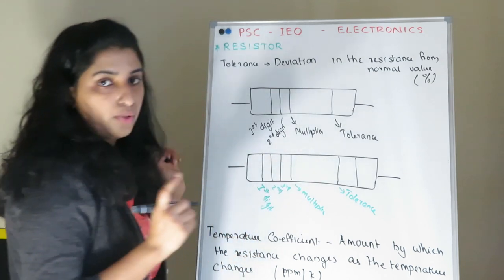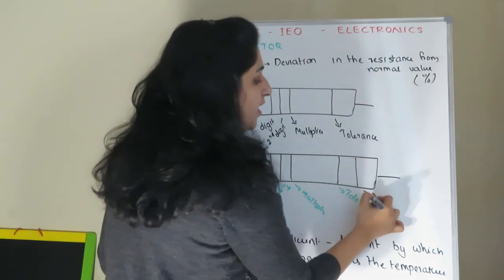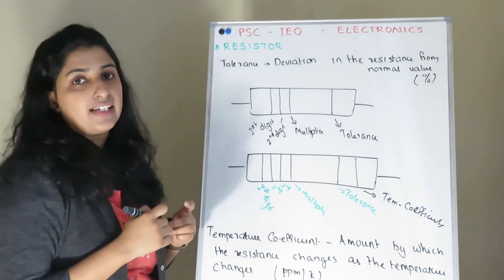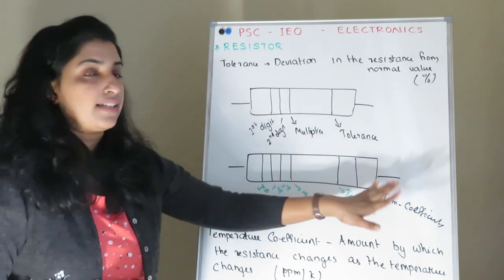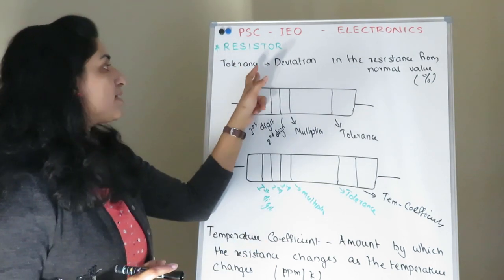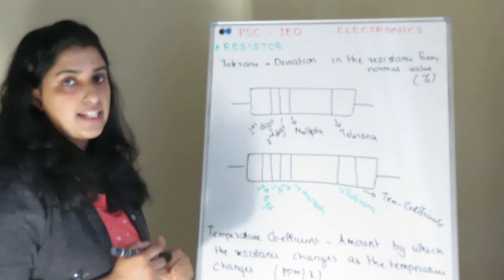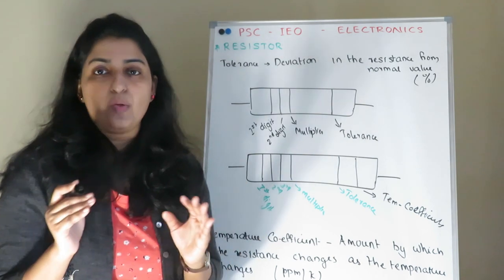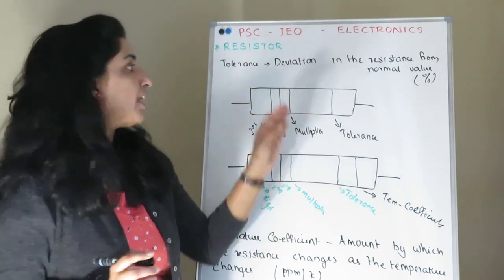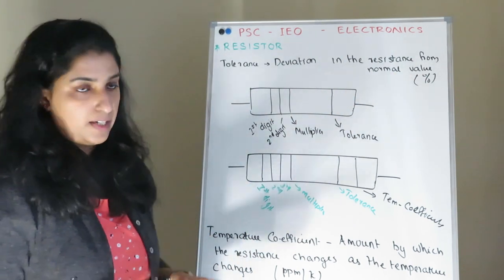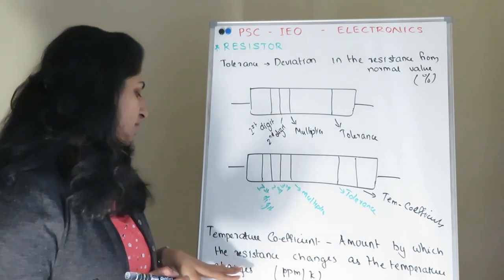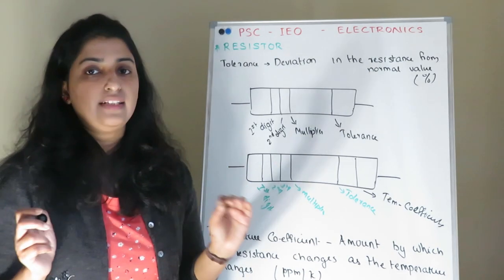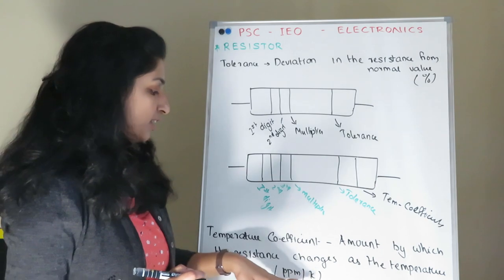In a 6-band code, the sixth band represents the temperature coefficient. Tolerance is the deviation of the resistance from its nominal value, expressed as a percentage. The temperature coefficient indicates how much the resistance value changes per degree of temperature change, measured in parts per million per kelvin.